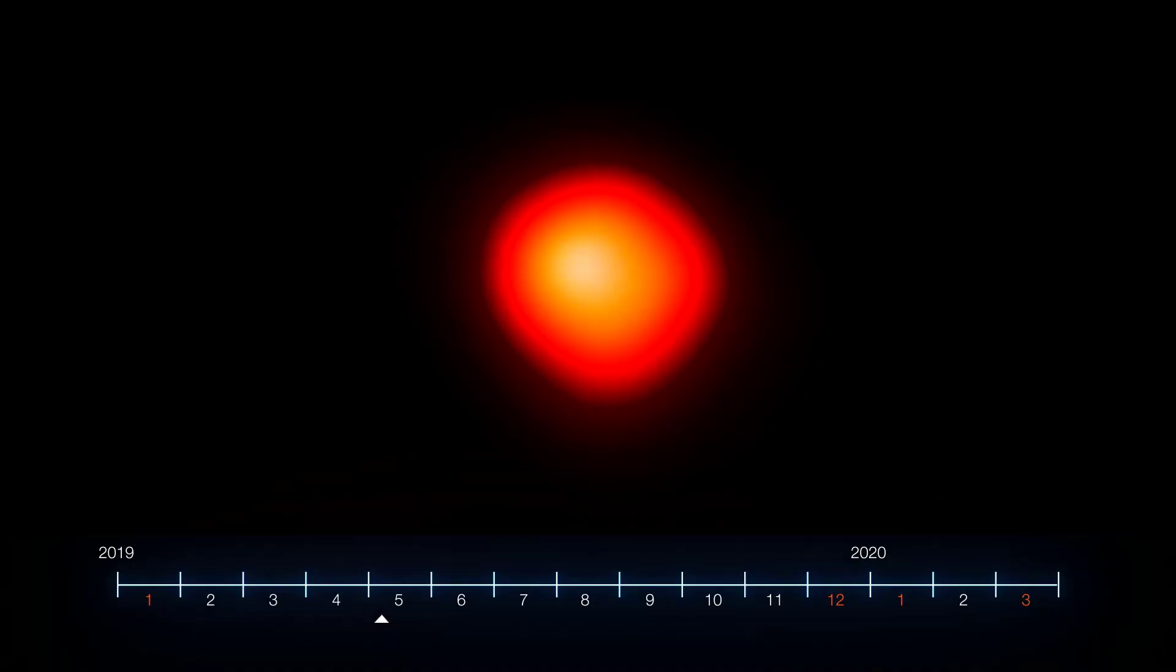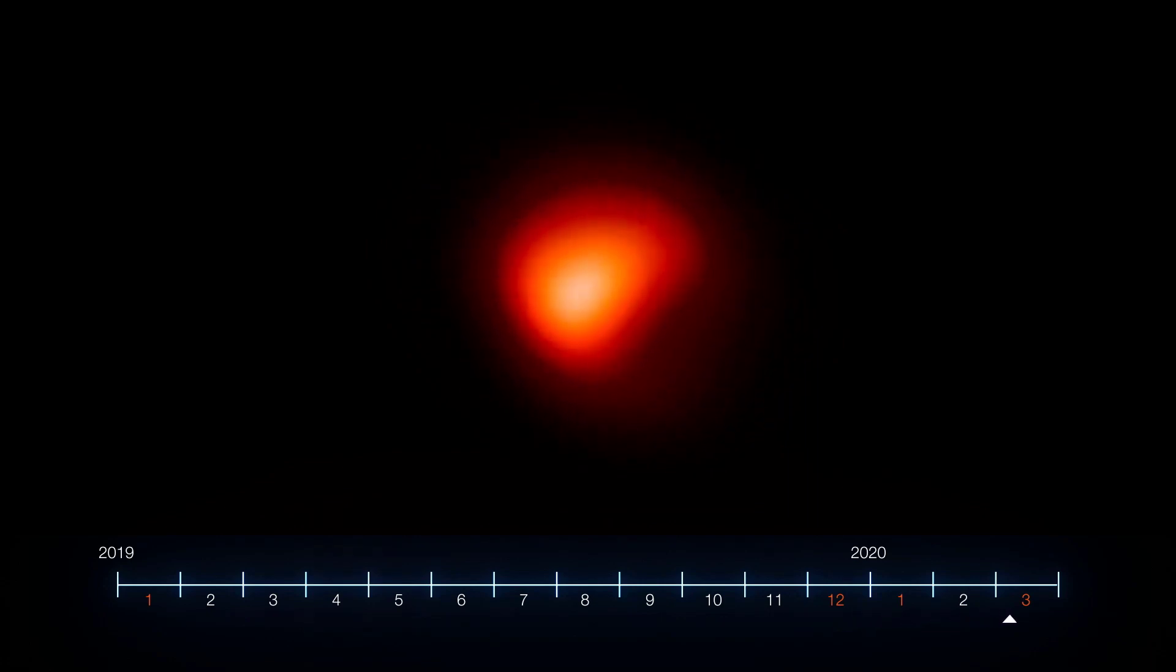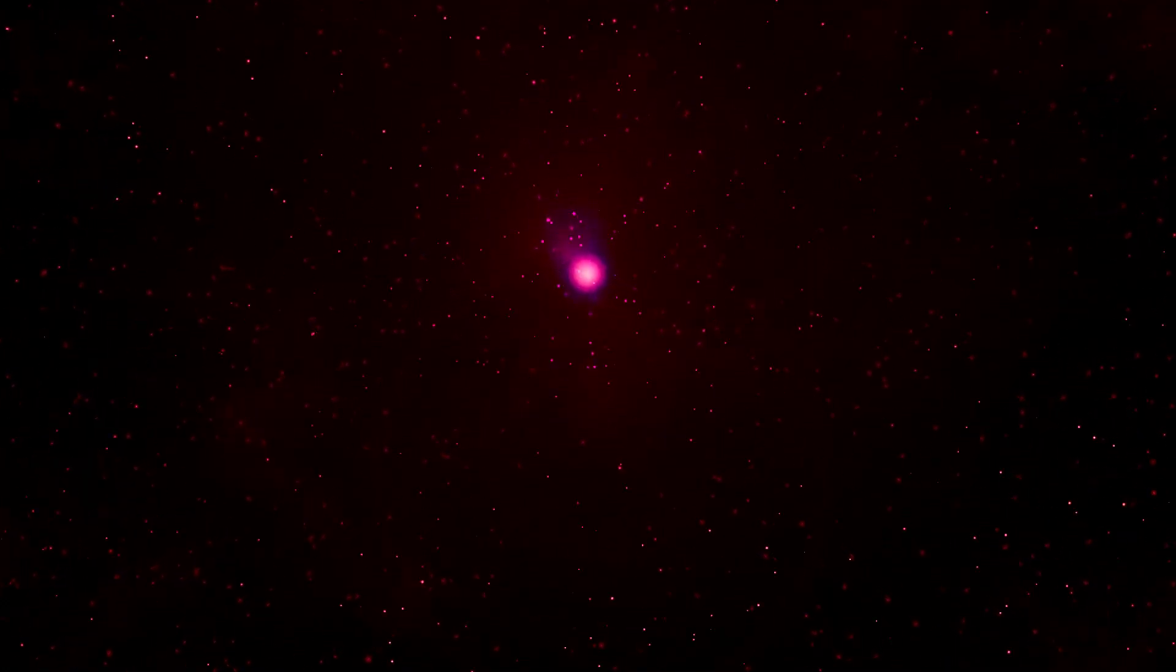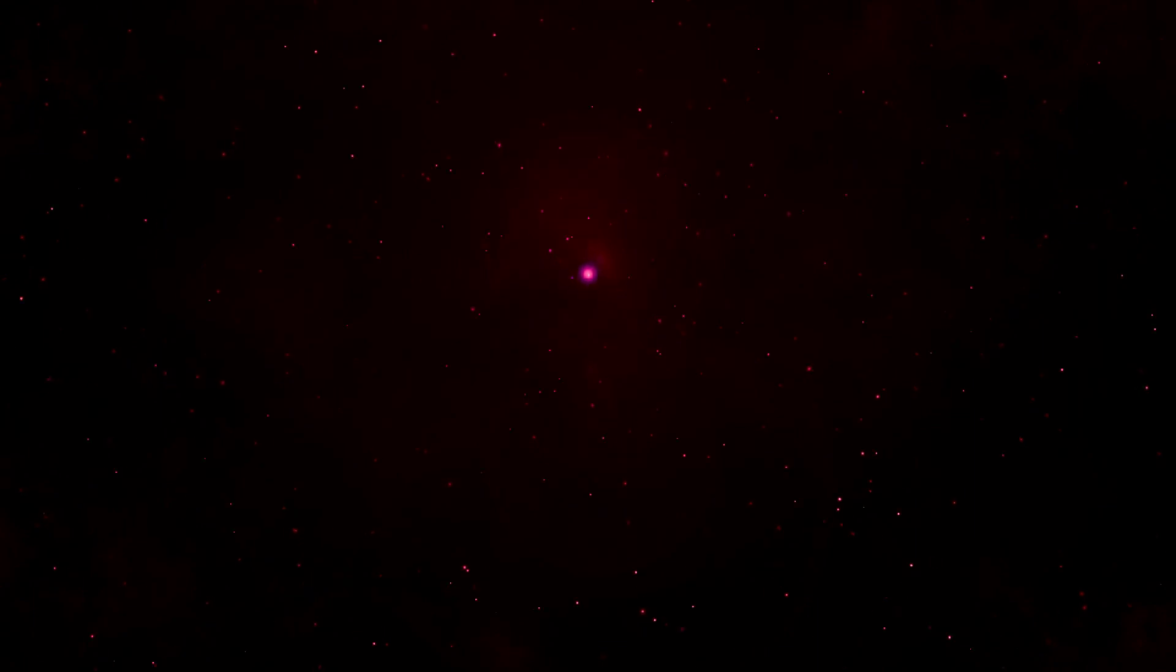By mid-February 2020, Betelgeuse had lost roughly three times as much brightness, going from magnitude 0.5 to magnitude 1.7. However, by the fifth day, it appeared that Betelgeuse had stopped dimming altogether, effectively ending the dimming event.